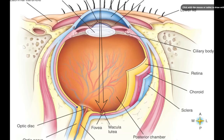We also have a spot where we don't have any vision — no rods or cones — called the optic disc, often referred to as the blind spot. It is completely absent of both rods and cones.